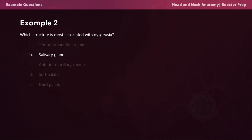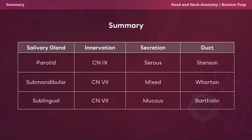For the final video summary: the parotid gland is innervated by cranial nerve 9, secretion is serous, and the duct is Stensen's. The submandibular gland is innervated by cranial nerve 7, secretion is mixed, and the duct is Wharton's. The sublingual gland is innervated by cranial nerve 7, secretion is mucous, and the duct is Bartholin's.